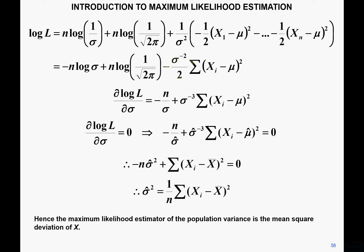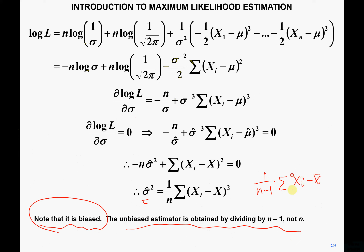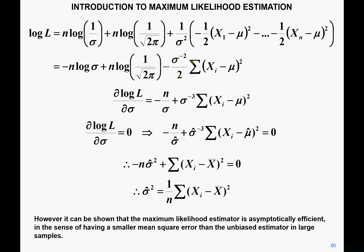The maximum likelihood estimator of mu is the sample mean. The maximum likelihood estimator of the population variance is the mean square deviation of x divided by n. Note that the MLE estimator of variance is biased — the unbiased estimator divides by n minus 1, not n, which is the formula used when calculating sample variance. However, it can be shown that the MLE estimator is asymptotically efficient, having a smaller mean square error than the unbiased estimator in large samples.